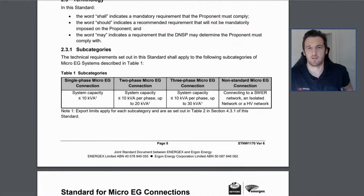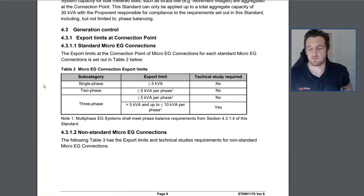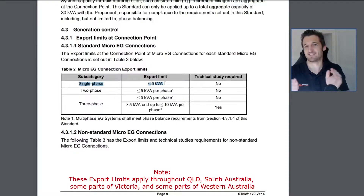Before I go into defining what export limiting is, I'm just going to refer to the Energex metering manual to show what households are allowed to install in the way of solar. Referring to table one here of single phase micro AG connections, you'll see we can have system capacities up to 10 kVA or up to 10 kilowatt inverter capacities on single phase. However there is a note saying export limits apply for these installations — single phase export limited to 5 kW. So you can install 10 kW on single phase but it's export limited to 5 kW. That's the main takeaway.